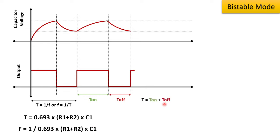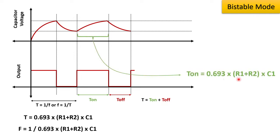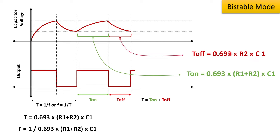The complete cycle has two sections: Ton and Toff, where T = Ton + Toff. During Ton, the capacitor charges through R1 and R2. During Toff, it discharges through R2. The equations are: Ton = 0.693 × (R1 + R2) × C1, and Toff = 0.693 × R2 × C1. By changing R1 and R2, we can control the on and off time of the square waves, which is very useful when adjusting the duty cycle of PWM signals.